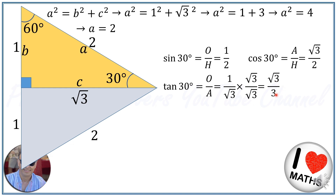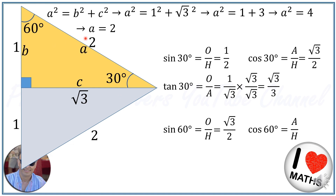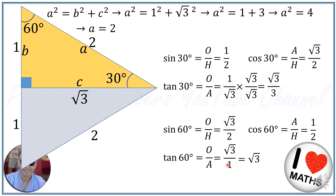This triangle also gives us the 60 degree values. Sine of 60 degrees is opposite over hypotenuse: the opposite is square root of 3 and hypotenuse is 2, so sine of 60 degrees is square root of 3 over 2. Cosine of 60 degrees is adjacent over hypotenuse: the adjacent is 1 and hypotenuse is 2, so cosine of 60 degrees is 1 over 2. And tangent of 60 degrees is opposite over adjacent, which is square root of 3.